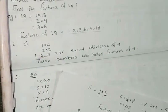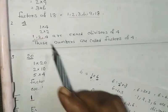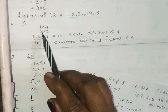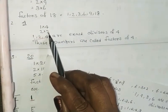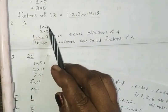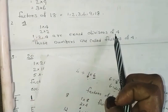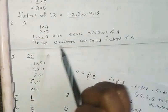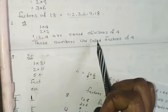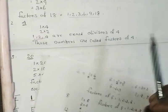Next example, 4. 4 is written as 1 into 4 and 2 into 2. So 1, 2, 4 are the exact divisors of 4. These numbers are called factors of 4.